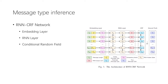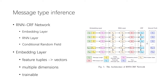To solve this sequence labeling problem, we propose an RNN-CRF network consisting of an embedding layer, a recurrent neural network, and a conditional random field. The embedding layer embeds feature tuples into embedding vectors for subsequent numerical calculation. Compared with scalar message lengths, the embedding vectors have multiple dimensions to store more feature information, and the embedding matrices are trainable during module training, allowing us to learn the optimal values of the embedding vectors.